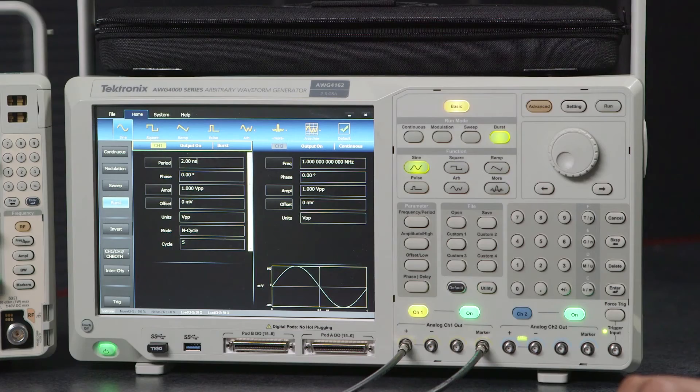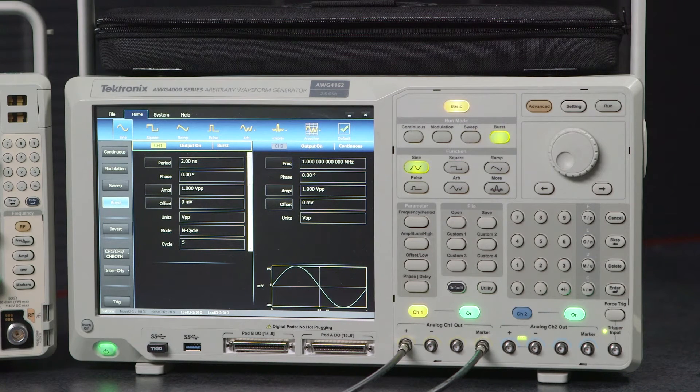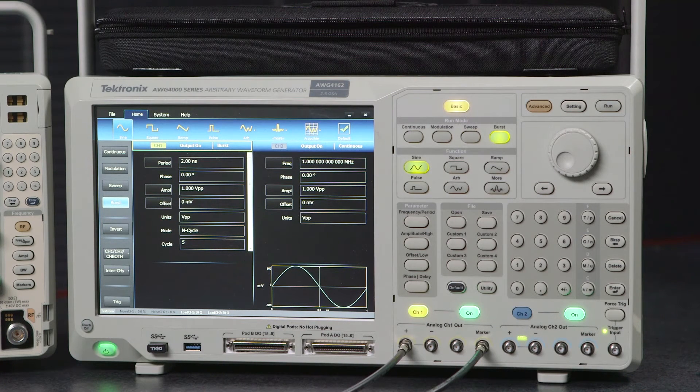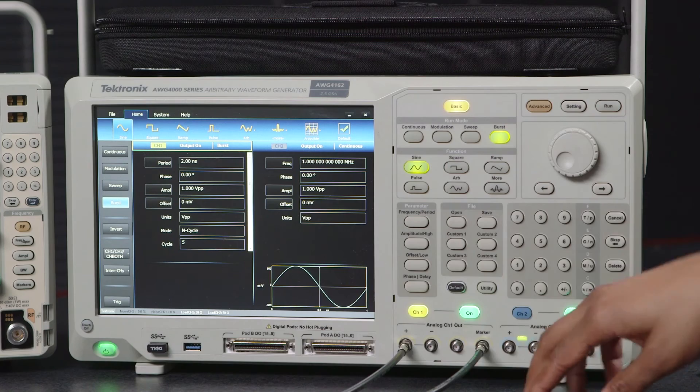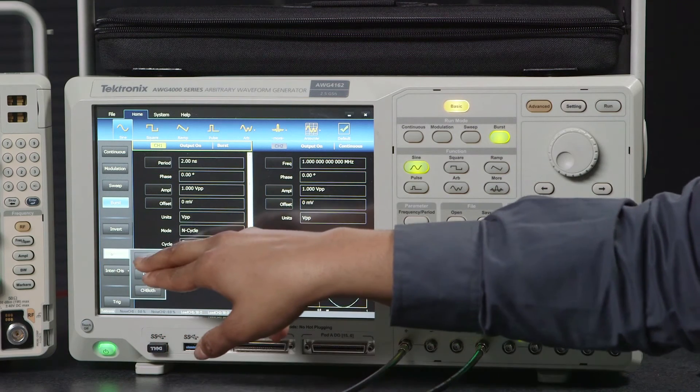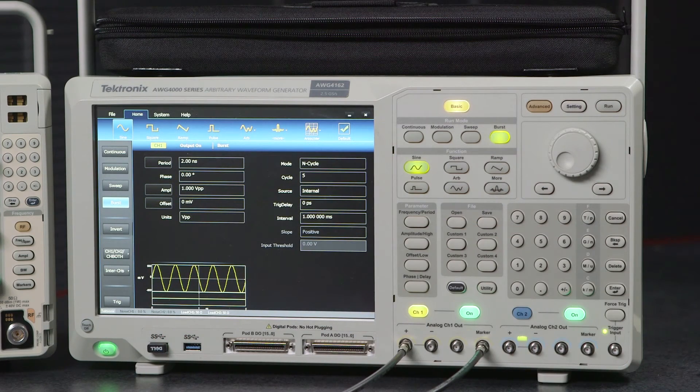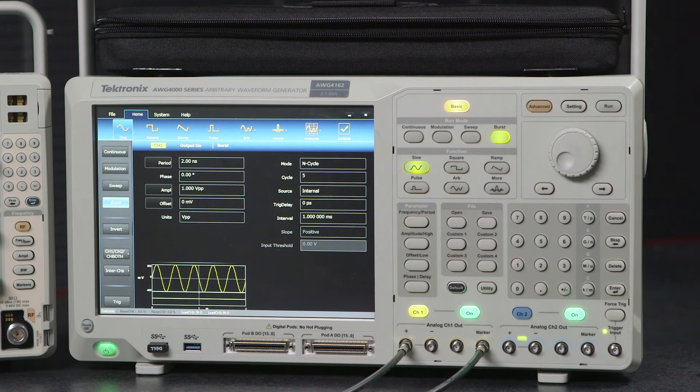As you can see there are a number of other ways that we can adjust this burst waveform. We can change its amplitude and offset but if we actually go and look at just this channel's output we can see options for trigger delay and interval and source.